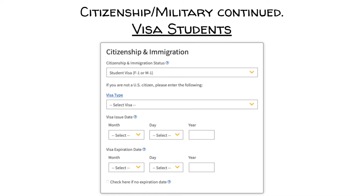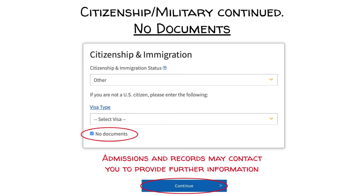Visa students: If you are an international student or have a visa, please select the visa type and include the issue date and visa expiration date. You may be asked to provide additional information, then move on to the military question. No Documents: If you are a DACA student or a student not born in the U.S., please select Other and check the box that states No Documents. Note that by clicking No Documents, Admissions and Records may contact you to provide further information later. Once the box is checked, click Continue.